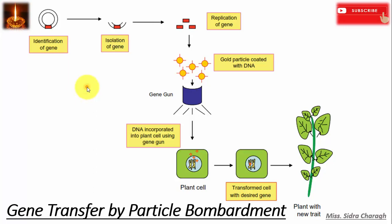Gene transfer by particle bombardment begins with the identification of the desired gene. The gene is then isolated and replicated — multiple copies are made of the gene we want to insert into the plant cell. The process continues by mixing the DNA construct with particles of heavy metal, normally tungsten or gold. These fine particles then stick to the actively charged DNA molecules.